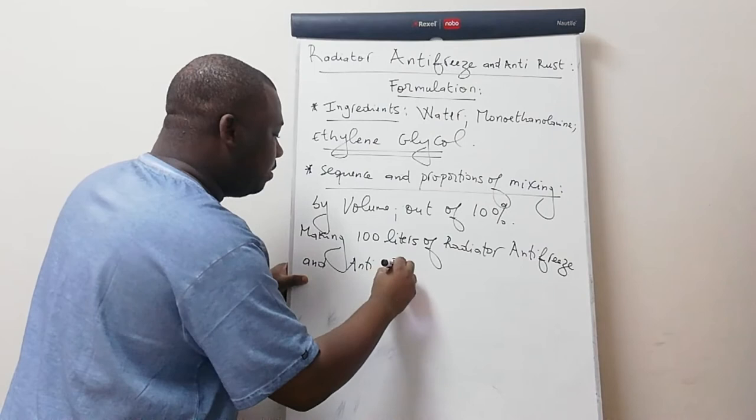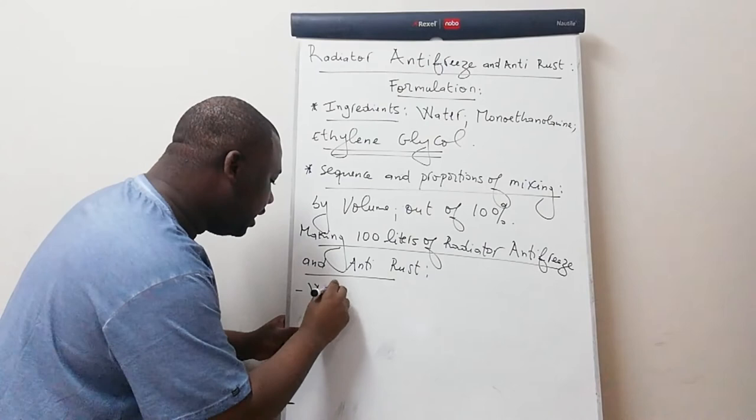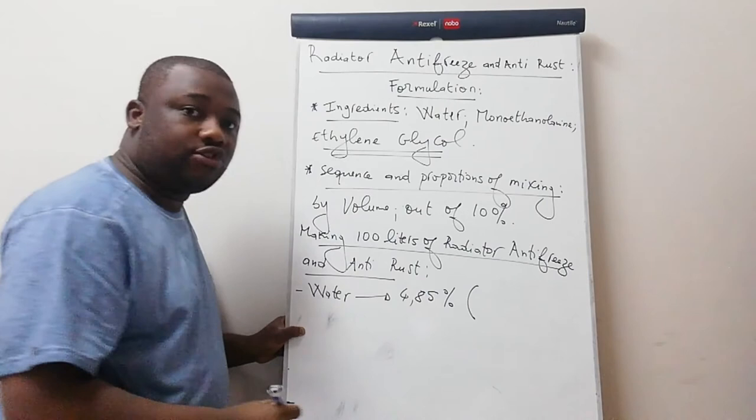The first ingredient to consider here is water. Water should be 4.85% of the total volume. And out of 100 liters, this will be 4.85 liters.